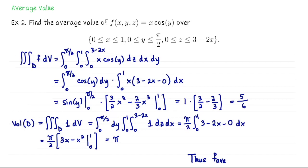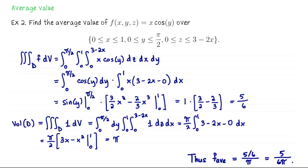Overall, the average value of this function is the triple integral of f over the domain divided by the volume of the domain, which is (5/6) ÷ π = 5/(6π).